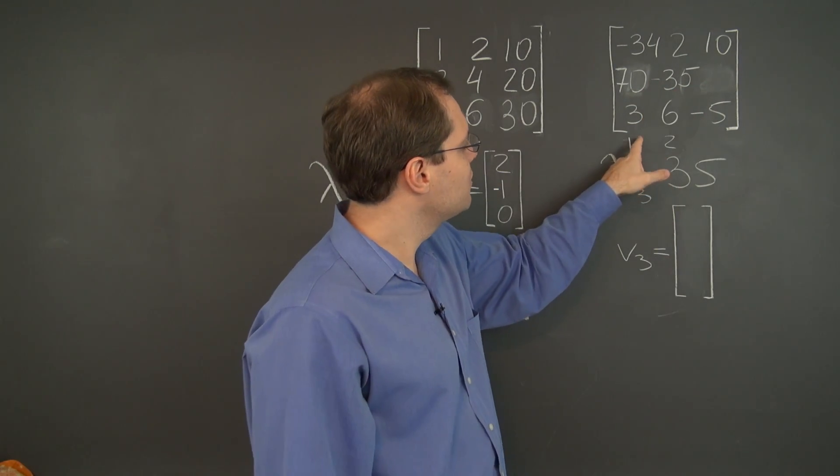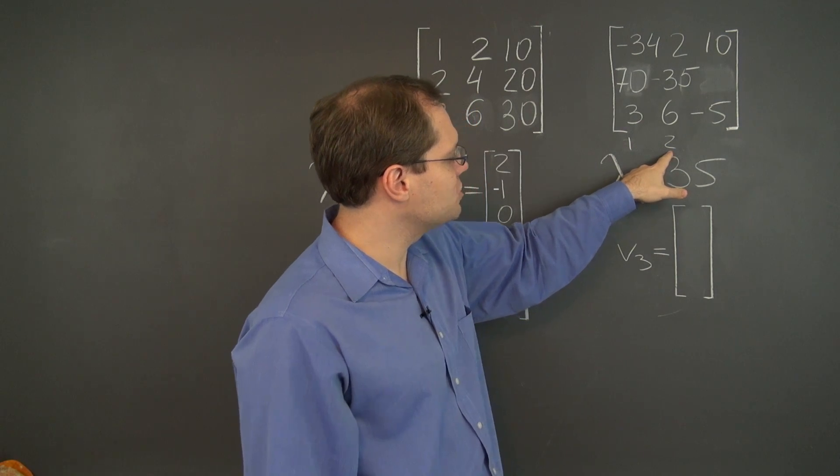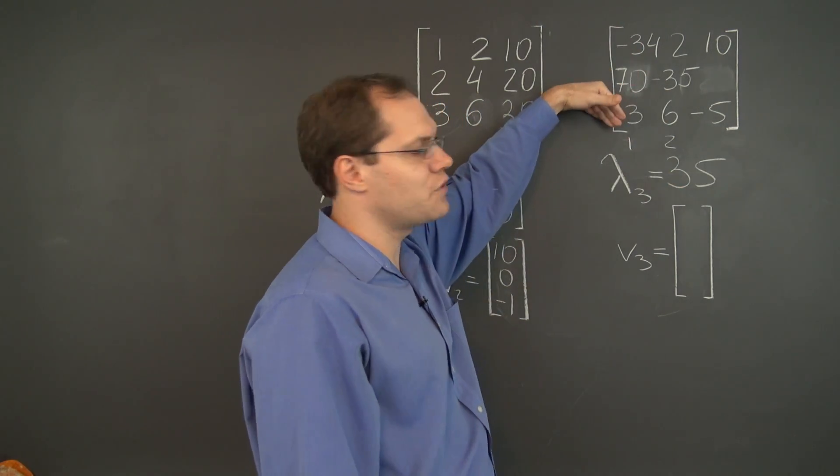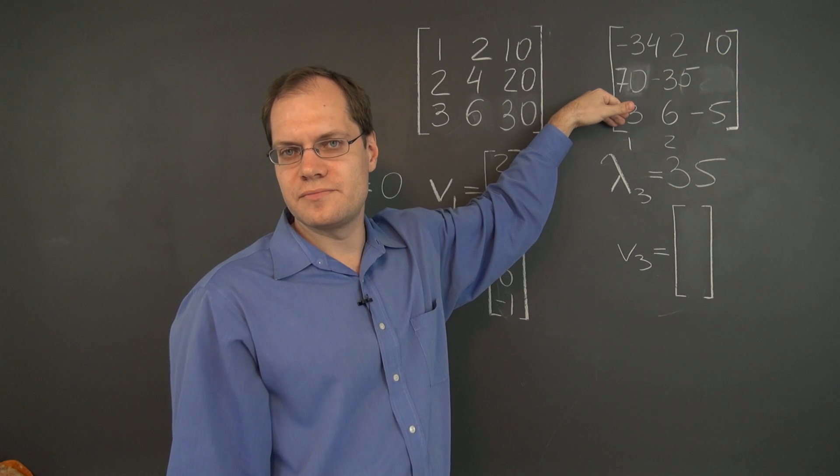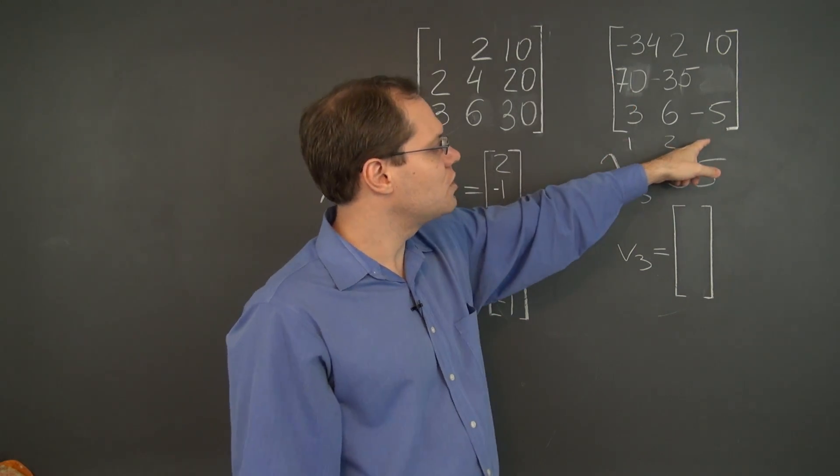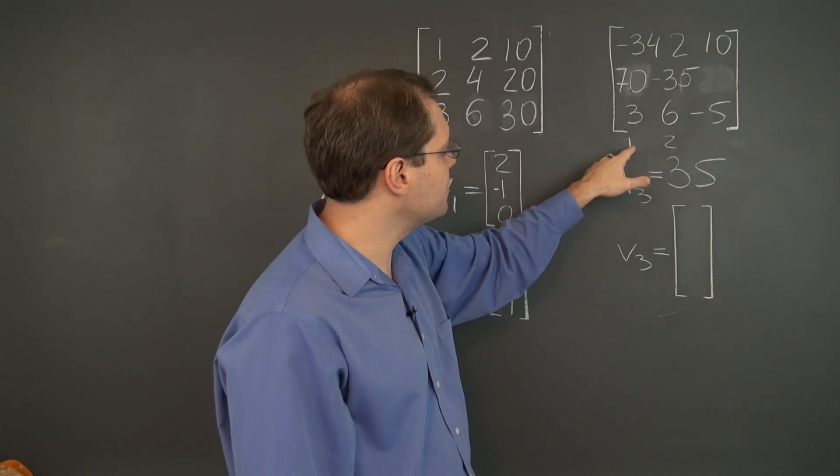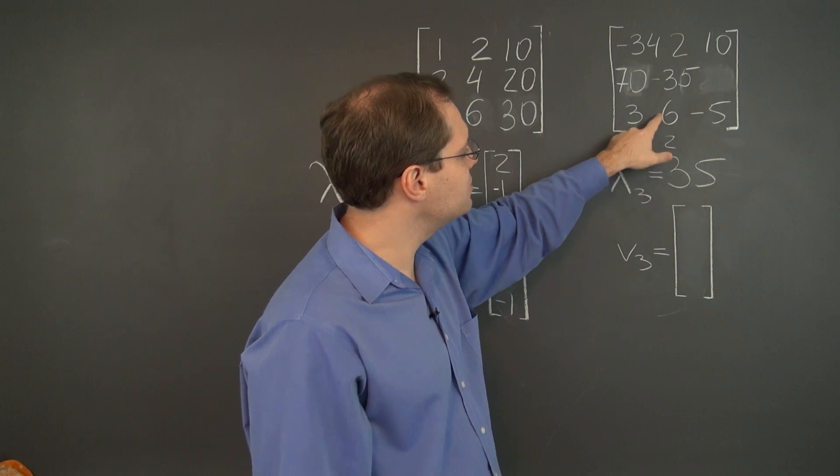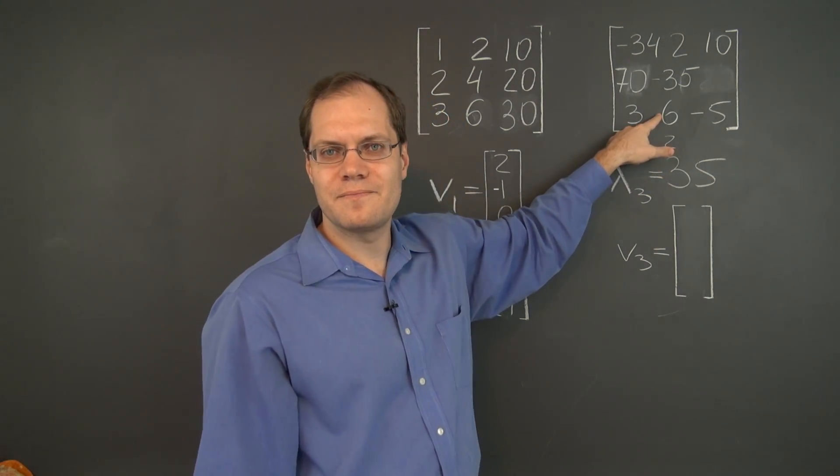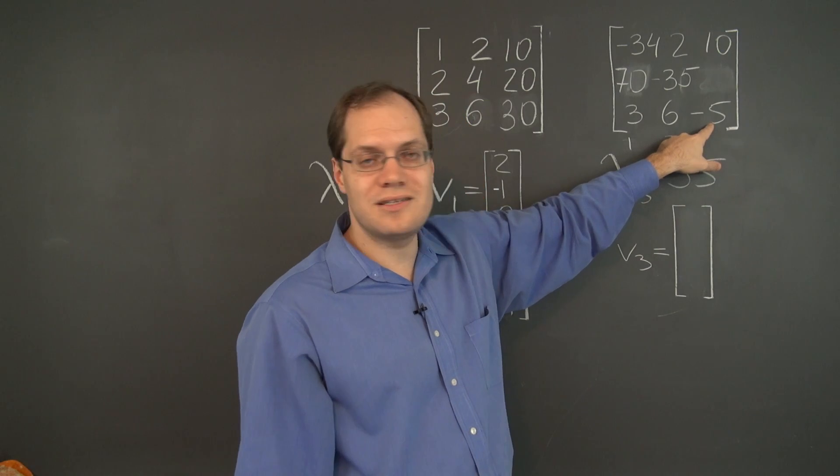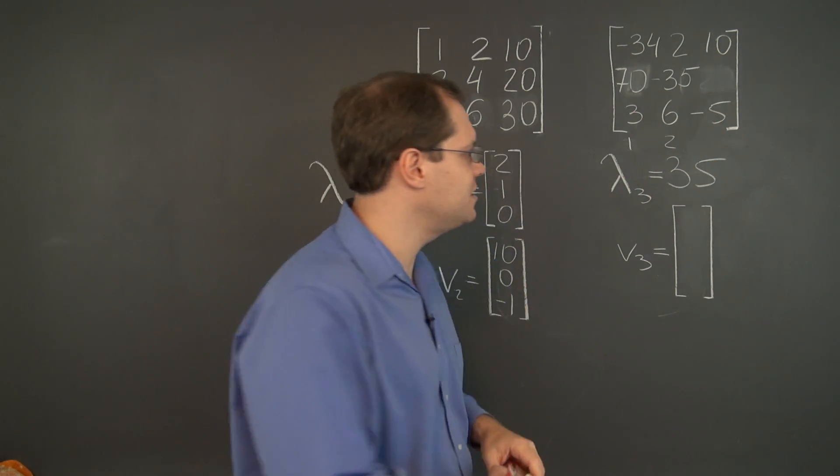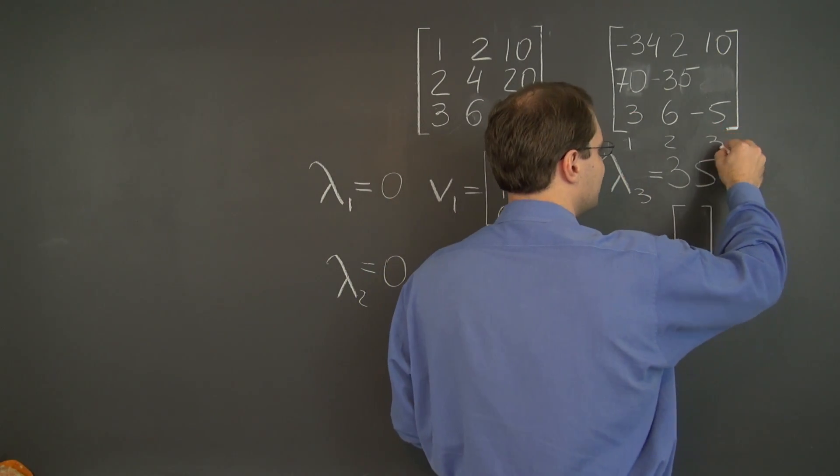And if I know that the first two columns come in proportion 1, 2, then by looking at either the first or the third rows, I should know in what proportion to take the third column. Because I have 3 plus 12, 15. And I need to put a number here so that this minus 5 would cancel the 15, which is, of course, 3.